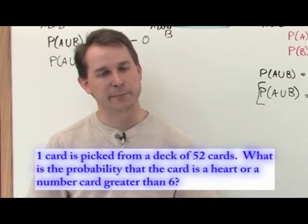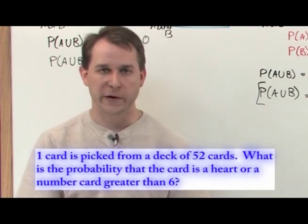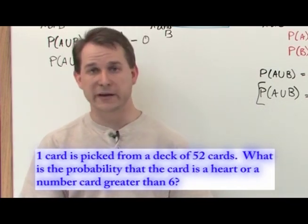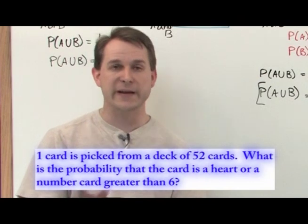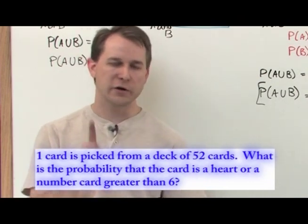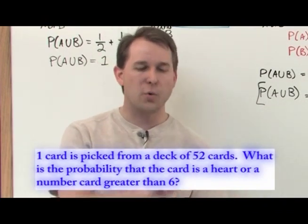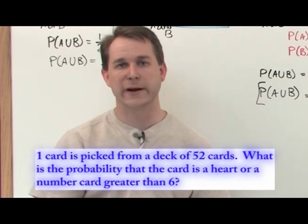First of all, you see the word 'or' in there so you know that you're gonna have two probabilities or two events, either one of which can happen gives you a success. One card is picked, only one, from a 52 card deck. What is the probability that that card is a heart or a number card greater than six?